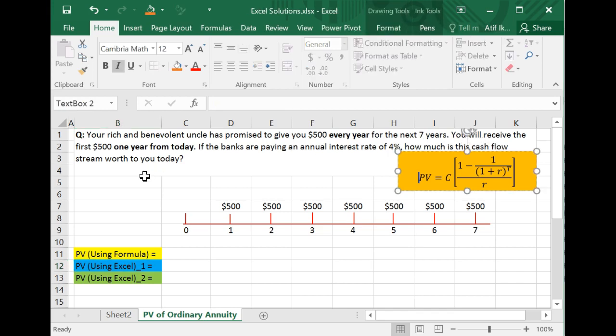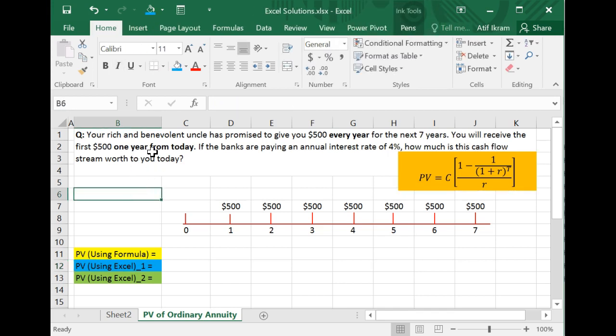You will receive the first $500 one year from today. Now this portion is what makes this an ordinary annuity because the first $500 is going to come to you one time period from now. If the banks are paying an annual interest rate of 4%, the question is how much is this cash flow stream worth to you today?